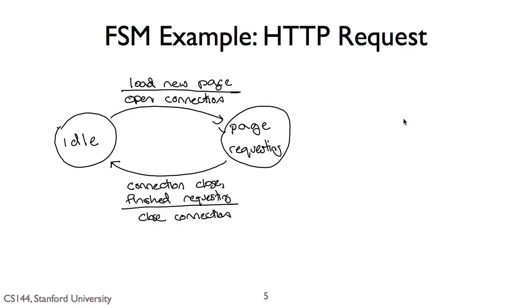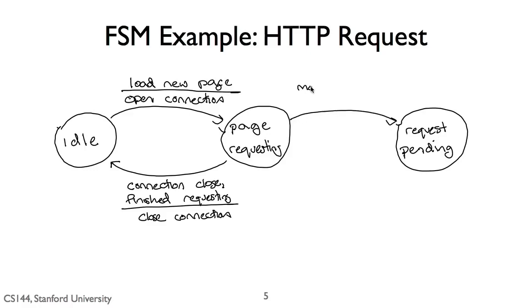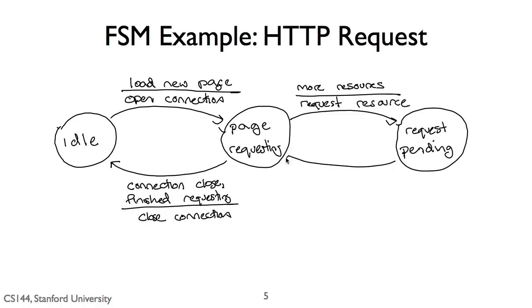We need one more state, which describes where we are in requesting a page. On the event of having more resources to request, we take the action of requesting a resource with an HTTP GET. This puts us in the requesting pending state. On the event of receiving the response, our system transitions back to the page requesting state. So here we have a three-state system: idle, page requesting, and request pending.